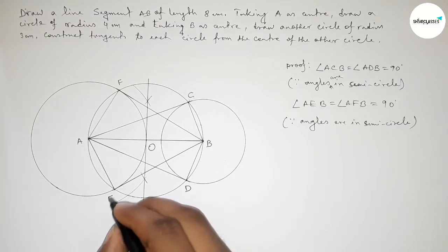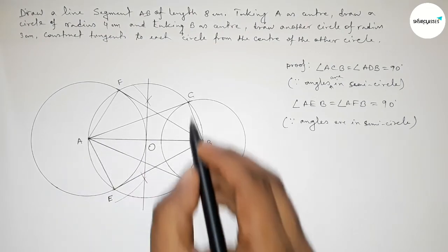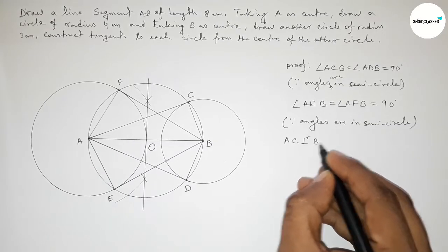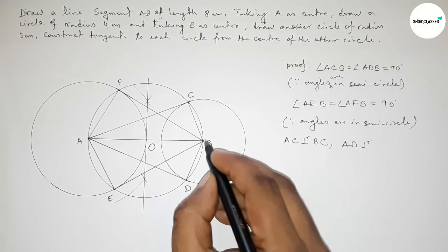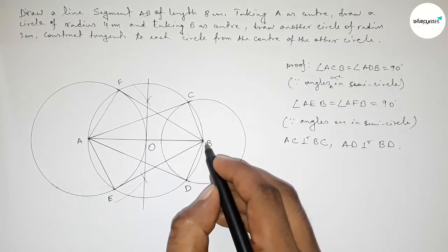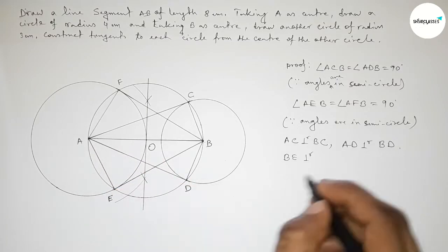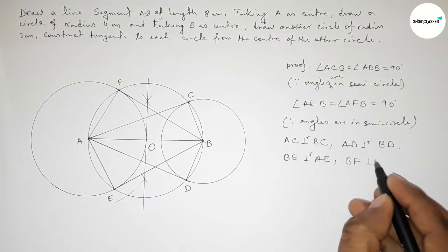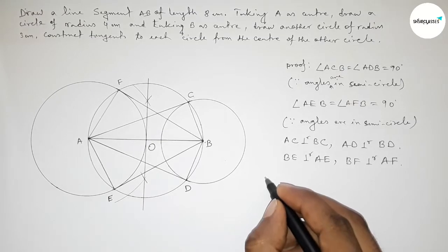Therefore, line AC is perpendicular to BC, and line AD is perpendicular to BD. Similarly, line BE is perpendicular to AE, and line BF is perpendicular to AF. From this we can say that the tangency conditions are satisfied.